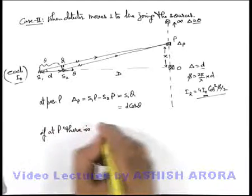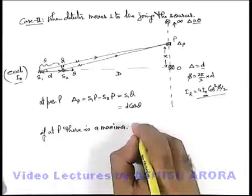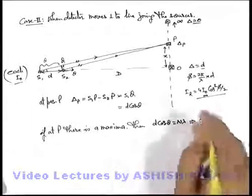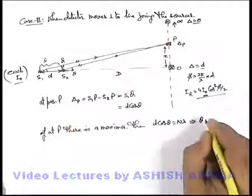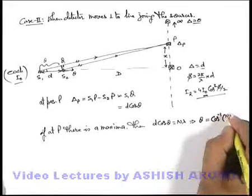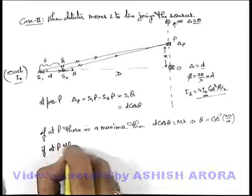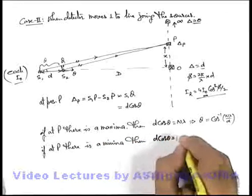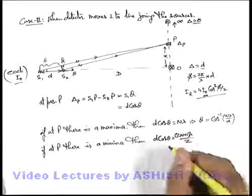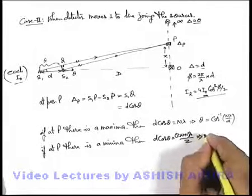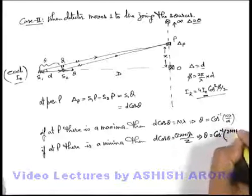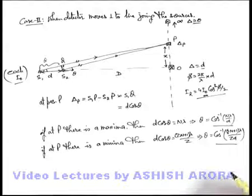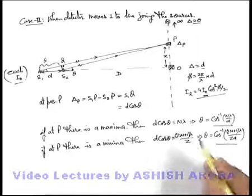So the path difference is d·cosθ. If at point P there is a maxima — a point of constructive interference — then d·cosθ = nλ. Using this we can find the value of θ, the angular position of the detector where it will detect a maxima: θ = cos⁻¹(nλ/d). Similarly, if at P there is a minima, then d·cosθ = (2n+1)λ/2, since for destructive interference the path difference should be an odd multiple of λ/2. This gives θ = cos⁻¹((2n+1)λ/(2d)). Using these expressions we can handle various kinds of numerical applications, and we will also take up some examples to understand the application of this concept.